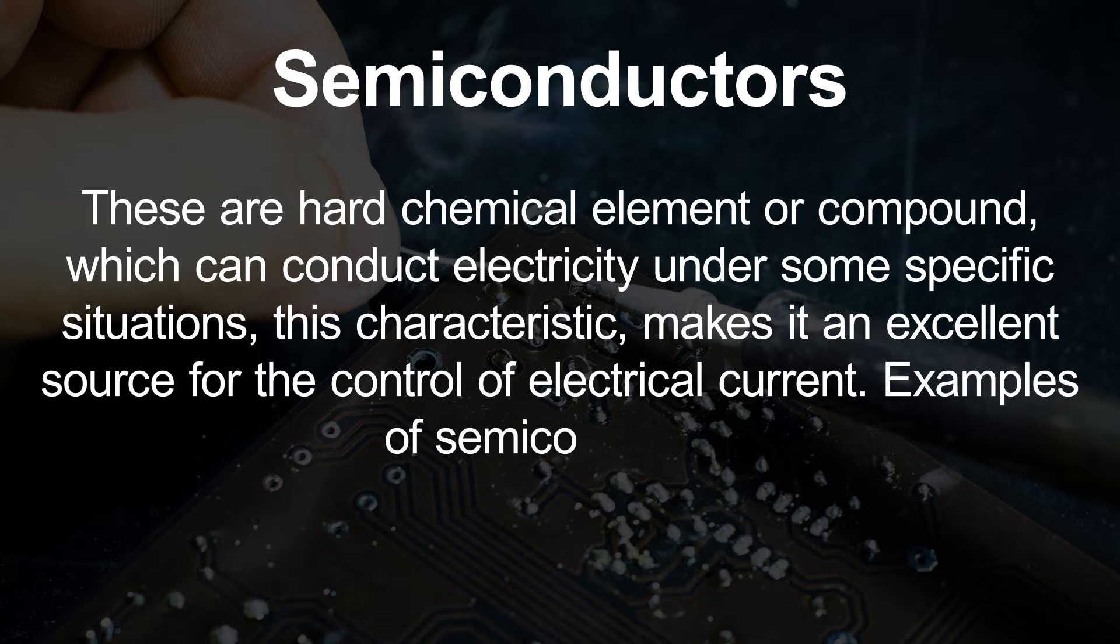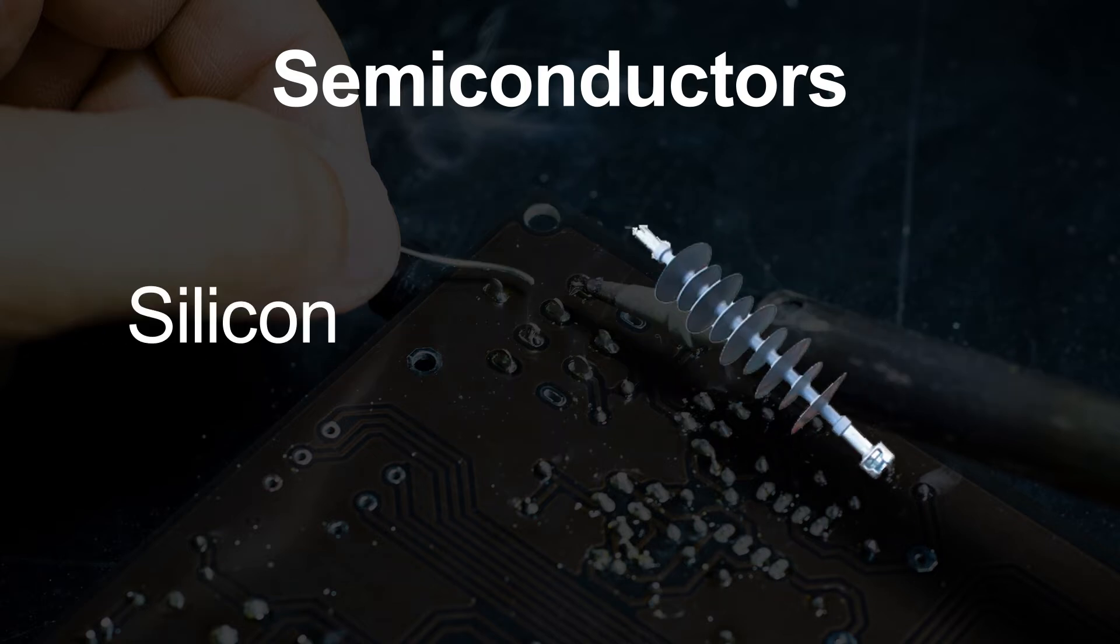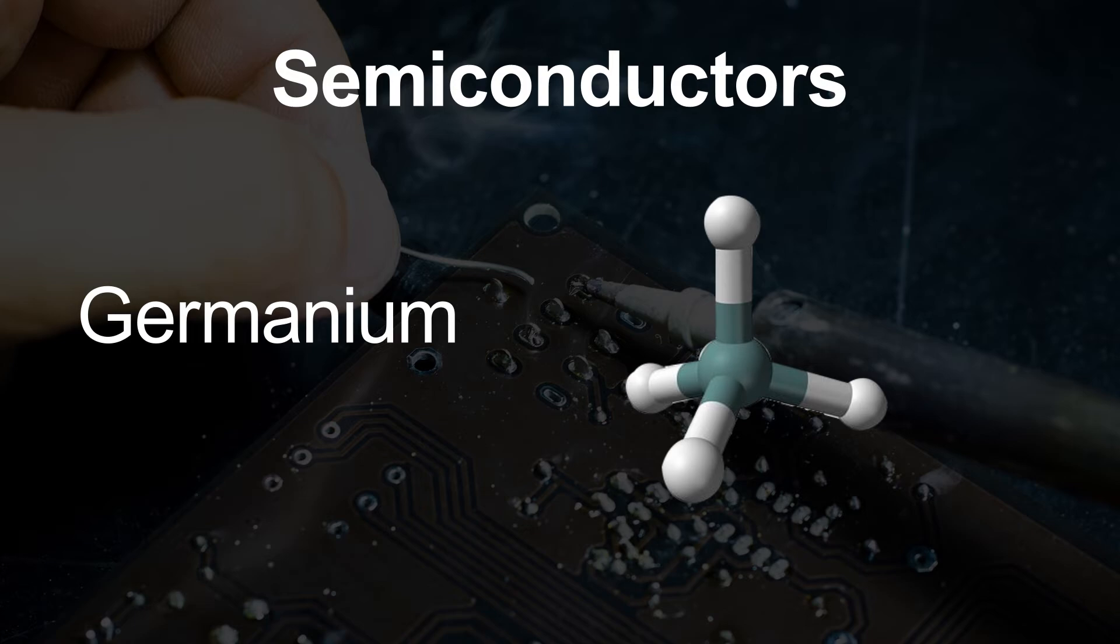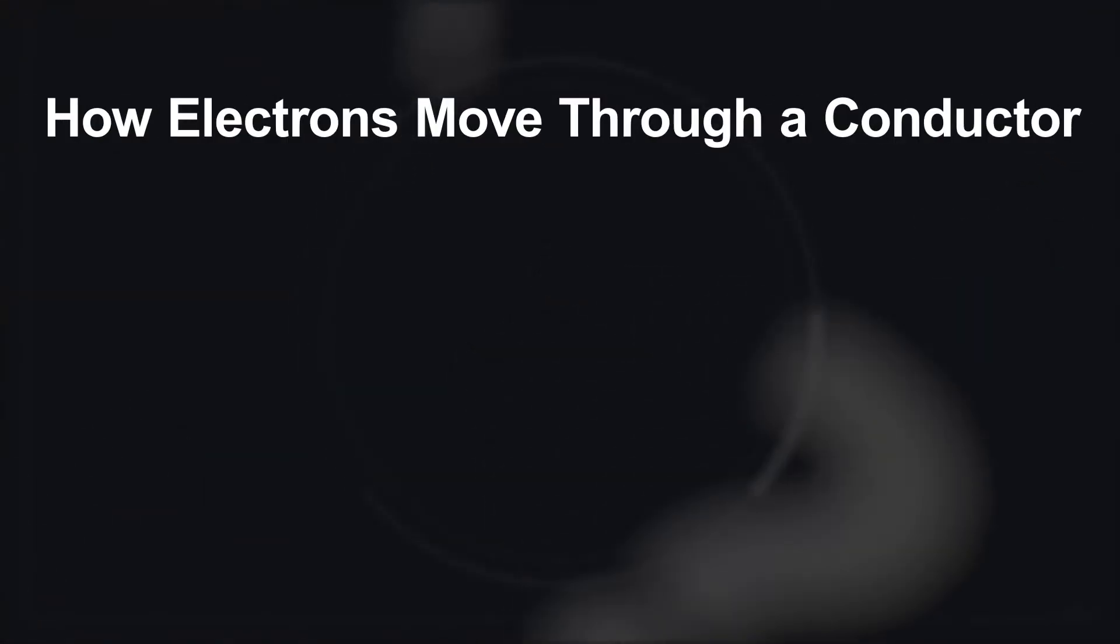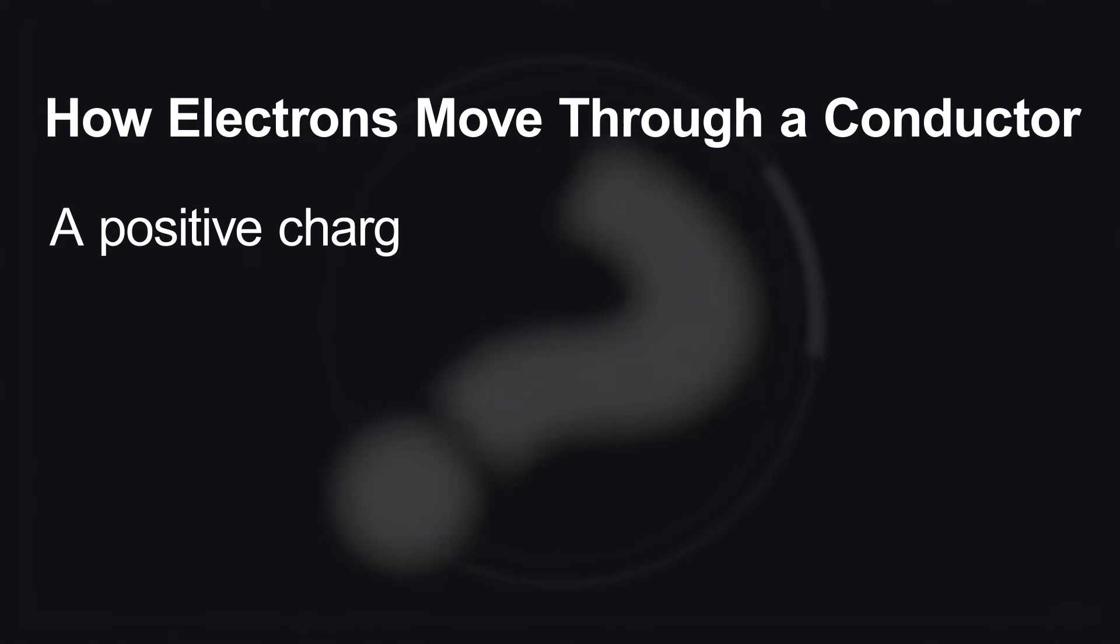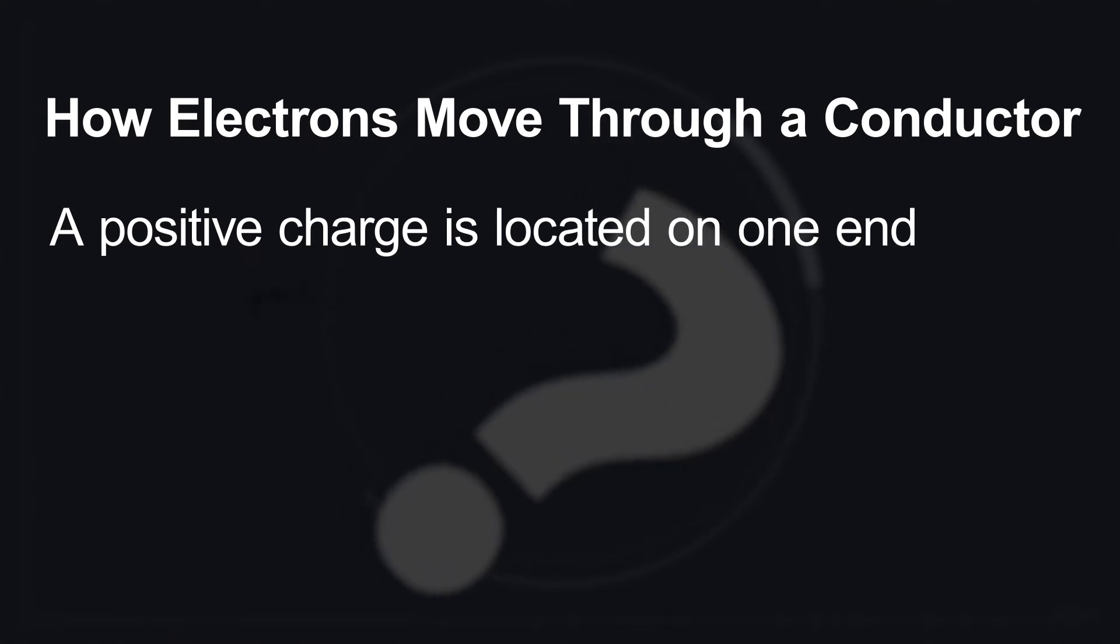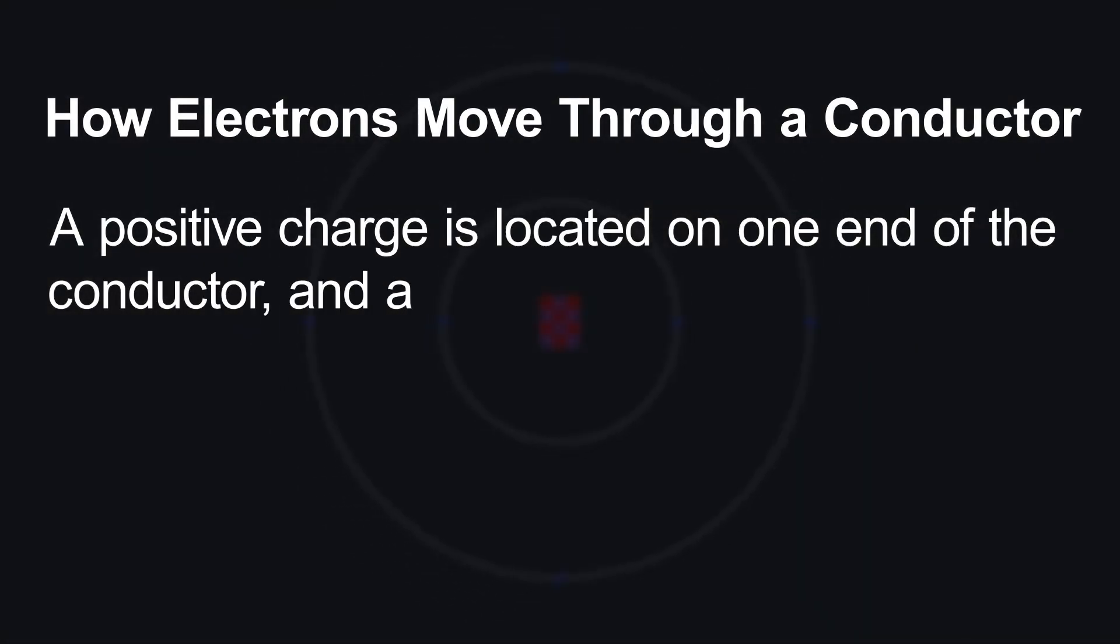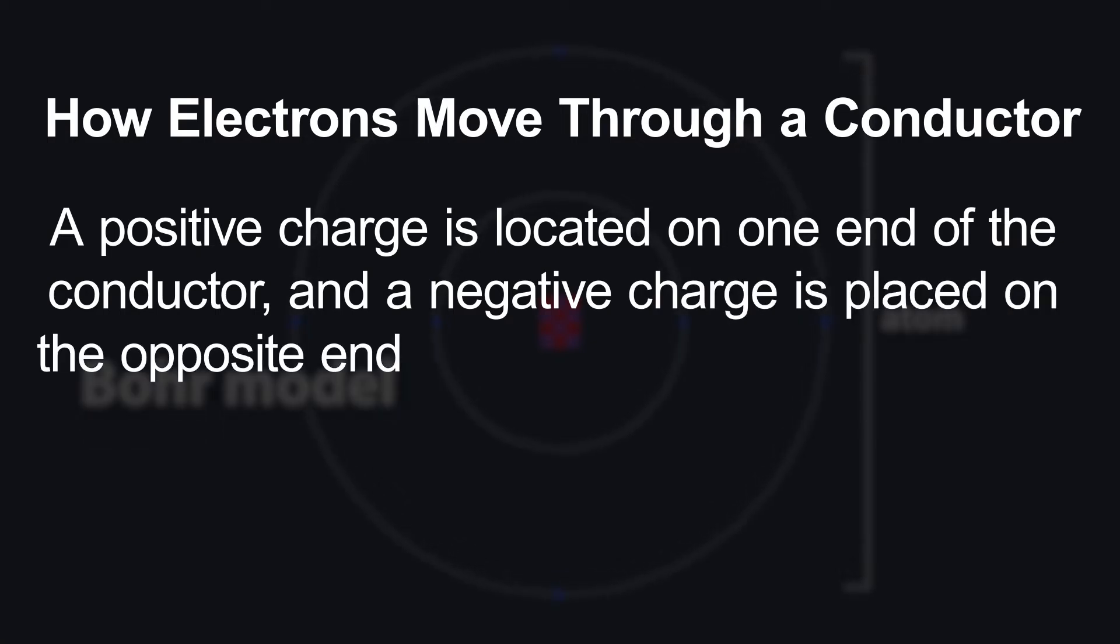Examples of semiconductors include silicon, carbon, and germanium. How electrons move through a conductor. A positive charge is located on one end of the conductor and a negative charge is placed on the opposite end of the conductor.